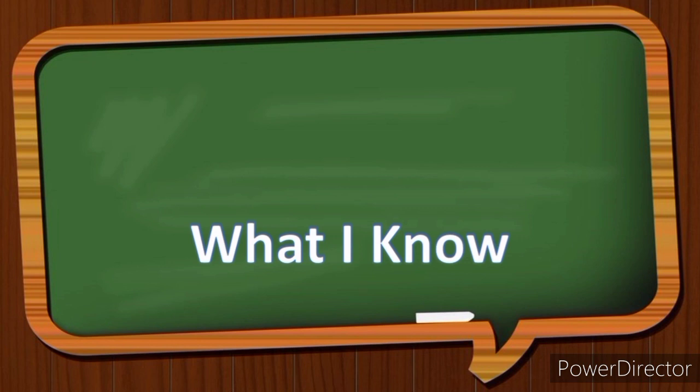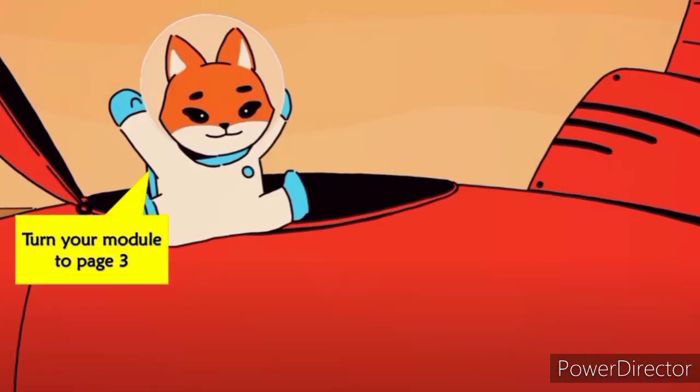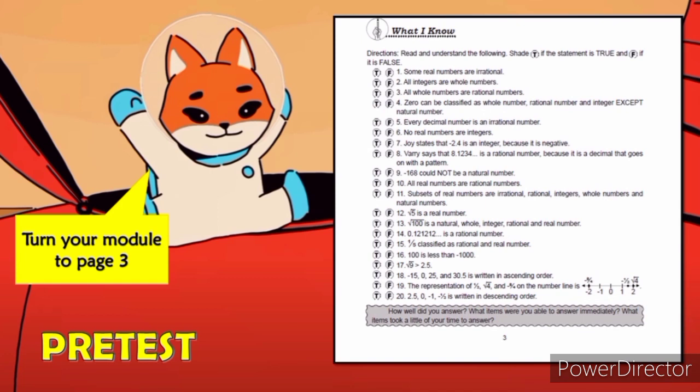What I Know. Turn your module to page 3. Let's answer the pretest. Read and understand the following. Shade T if the statement is true and F if it is false.